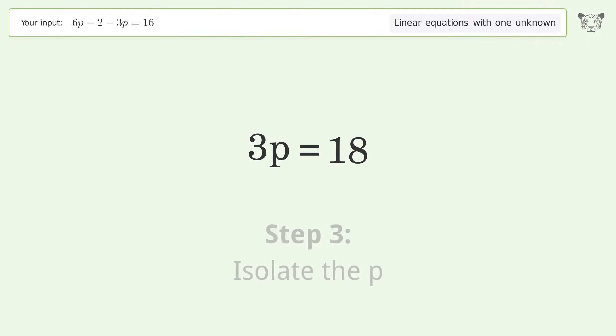Isolate the p. Divide both sides by 3. Simplify the fraction.